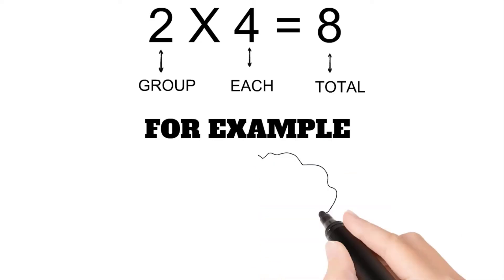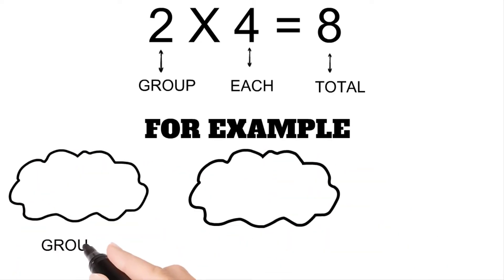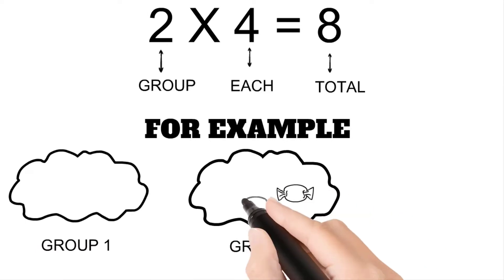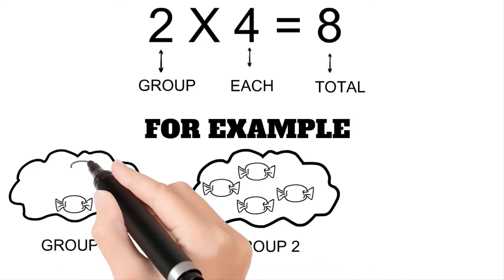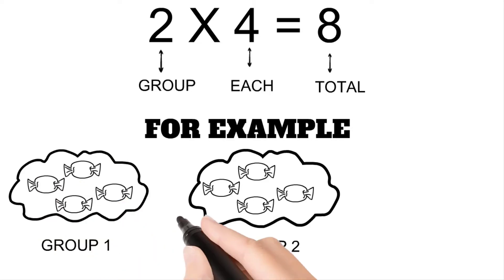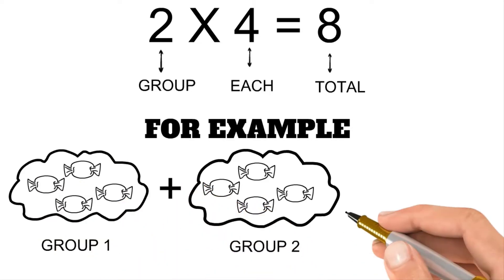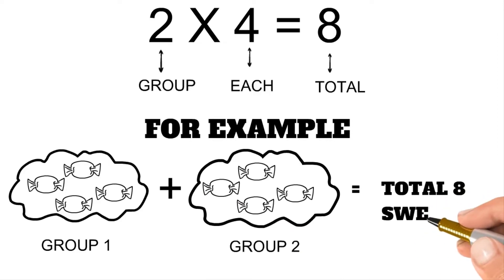For example, we have two groups — group one and group two. In group one we have four sweets, and group two also has four sweets. When we add these two groups together, we will get a total of eight sweets. Let's move to the next times table.